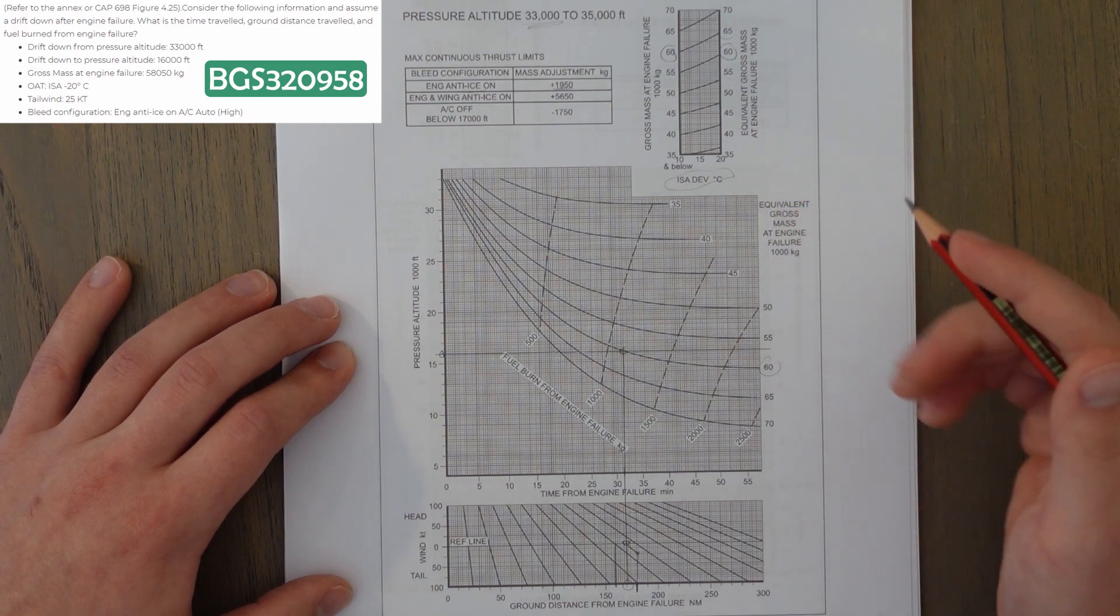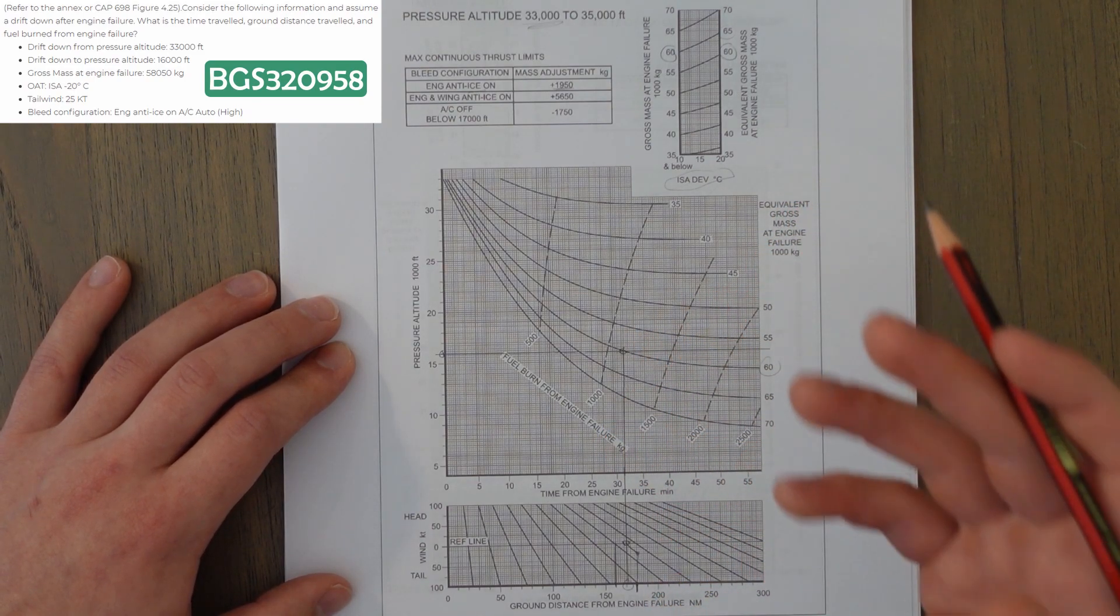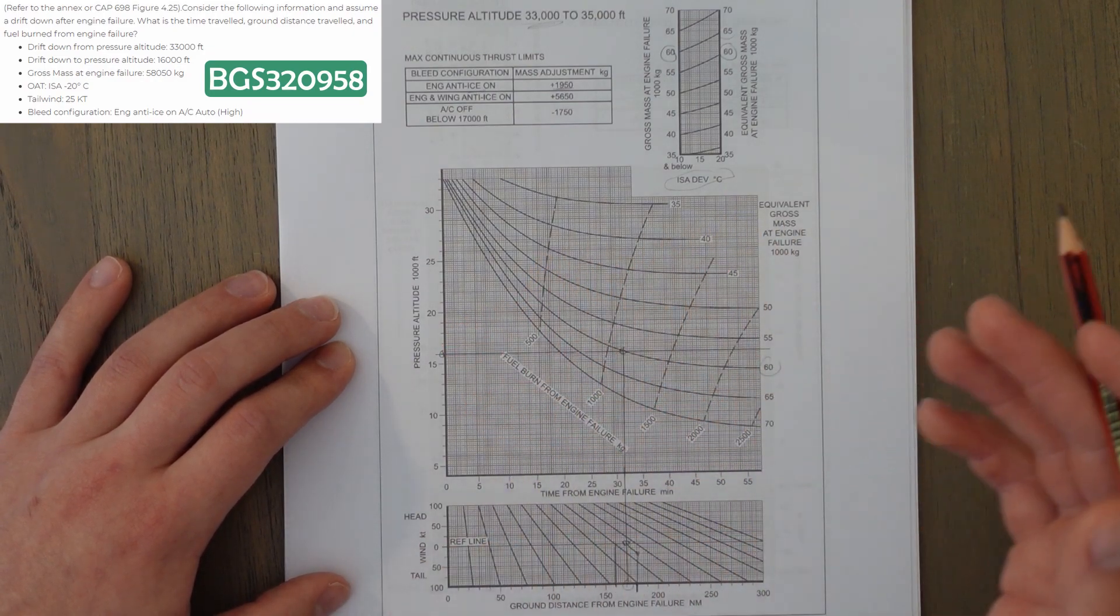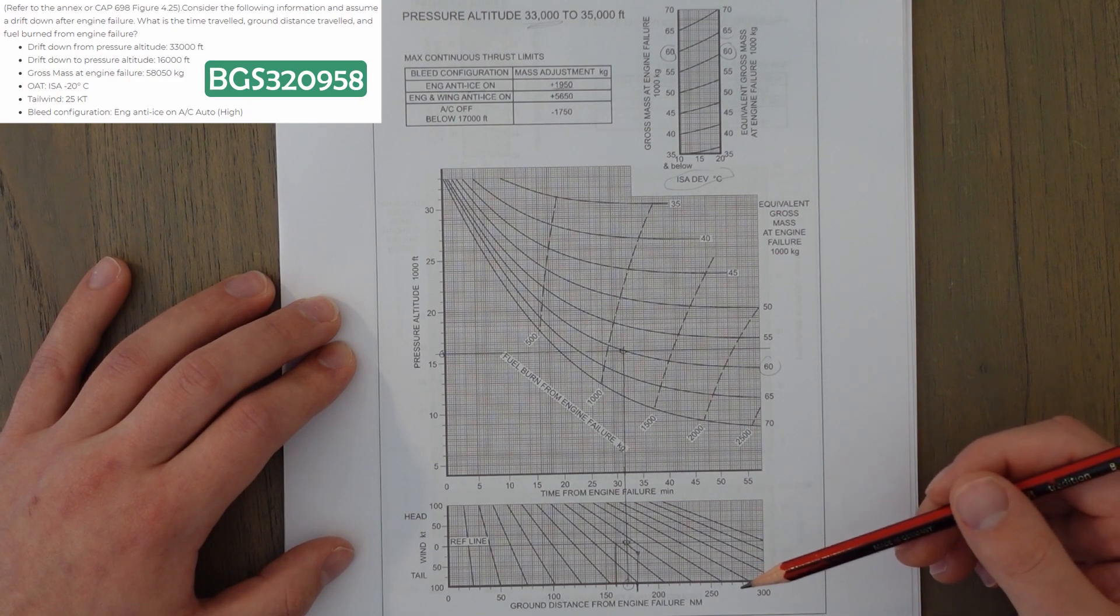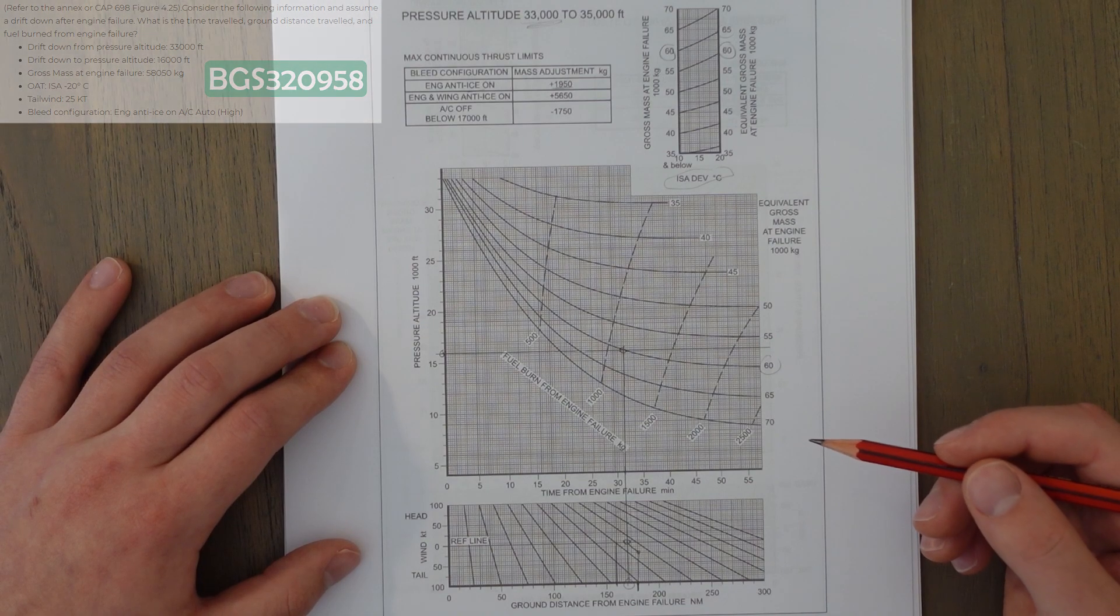We then have to go into the question and select the correct combination of time, fuel burn, and distance, which, out of the options available, the closest ones were 31 minutes with 182 nautical miles and 1,150 kilograms on the fuel burn.